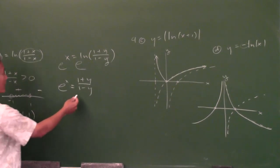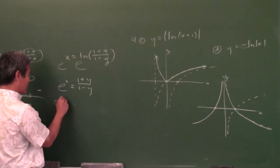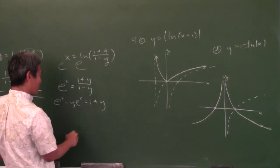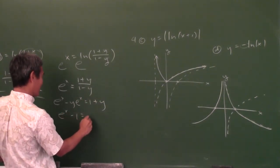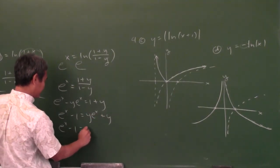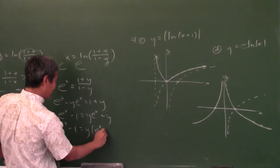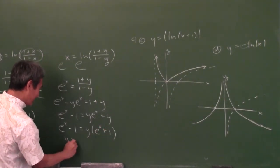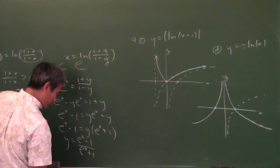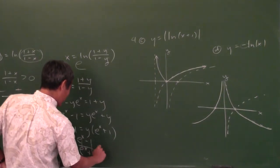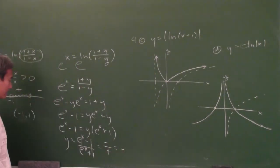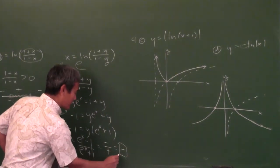Once you get there, how do you solve for y? Cross multiply — now it's just algebra 1. Put all the y's on one side: y·e to the x plus y, factor out the y, then divide. So y equals (e to the x minus 1) over (e to the x plus 1). The e to the x's and 1's simplify, so you just have negative over positive, which is negative. That's the answer.